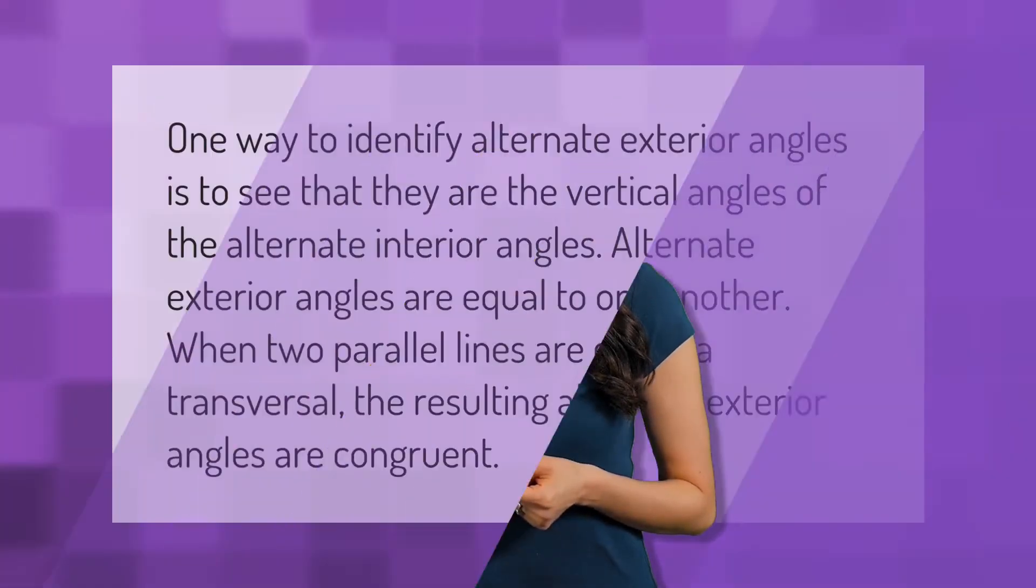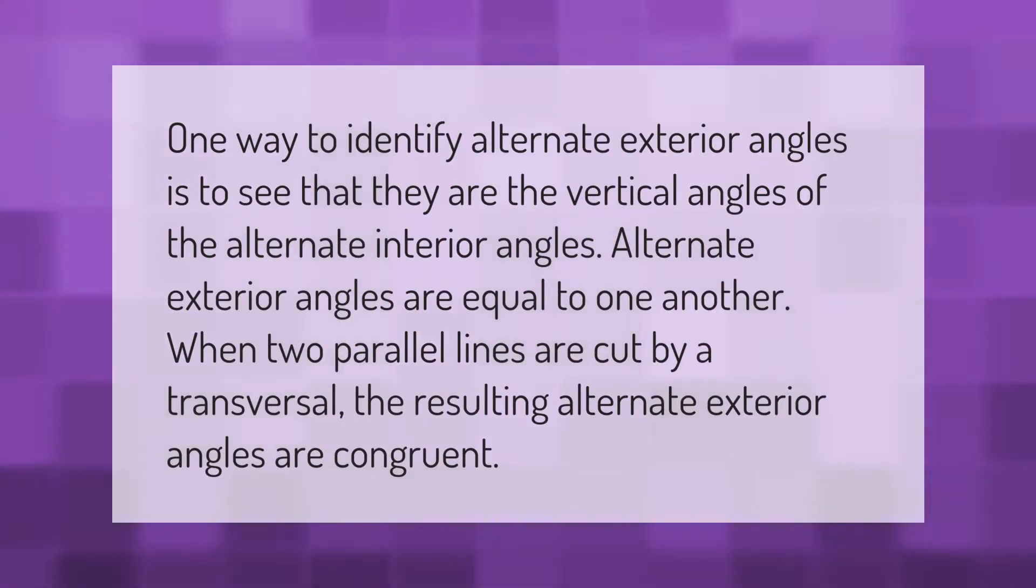One way to identify alternate exterior angles is to see that they are the vertical angles of the alternate interior angles. Alternate exterior angles are equal to one another. When two parallel lines are cut by a transversal, the resulting alternate exterior angles are congruent.